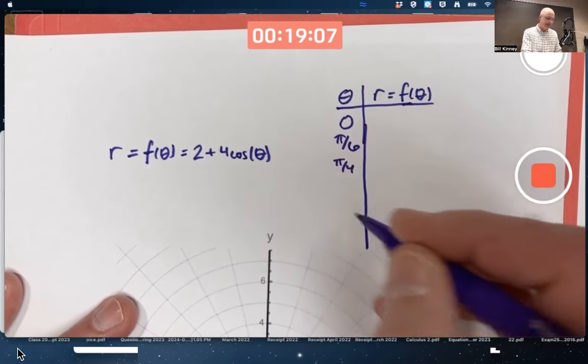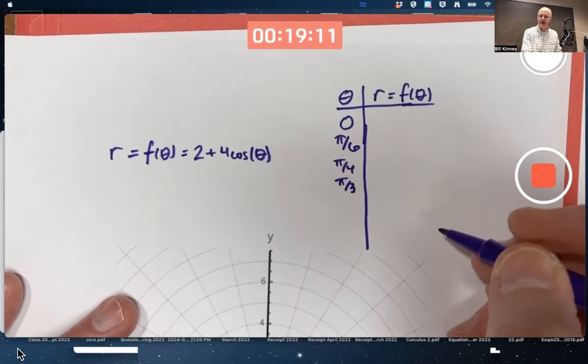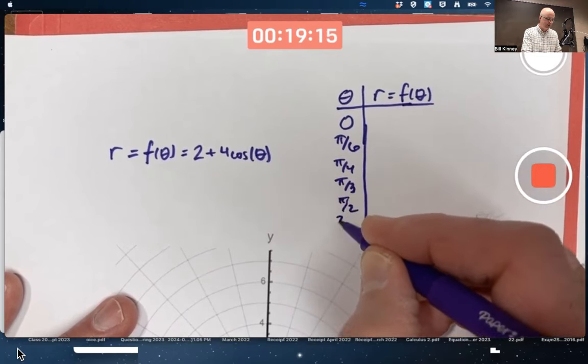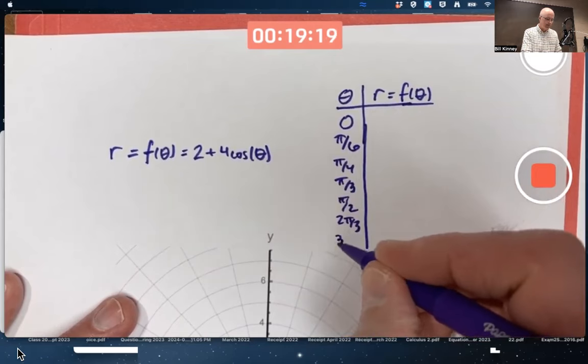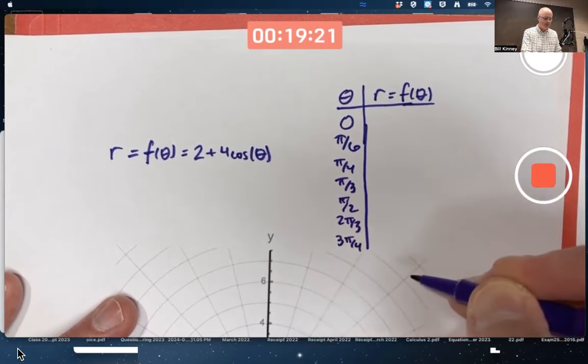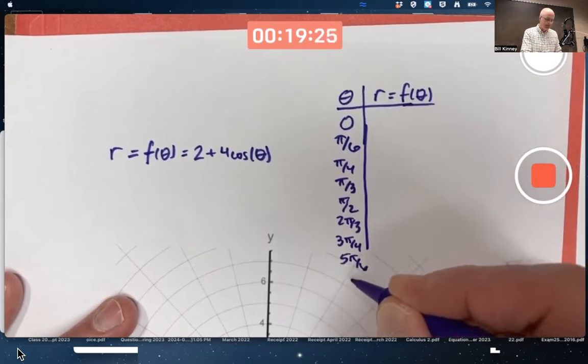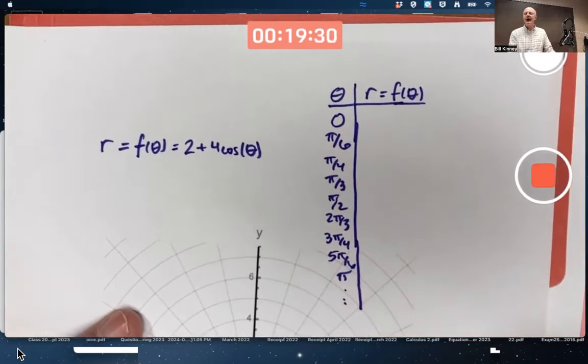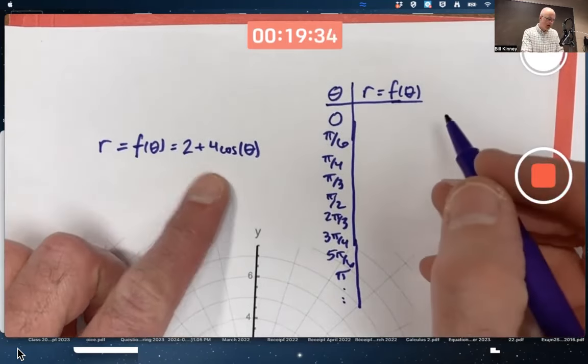0, pi over 6, which is 30 degrees, pi over 4, which is 45 degrees, pi over 3, which is 60 degrees, special angles. Pi over 2 is 90 degrees. Let's also do 2 pi over 3, which is 120 degrees, 3 pi over 4. Well, let's also do 5 pi over 6 and pi. And I could continue, but I think I will stop when I get to pi.